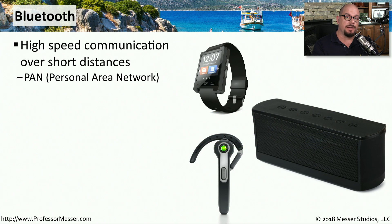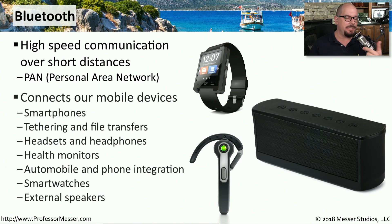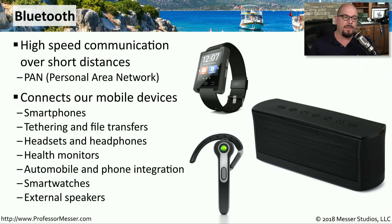Another common wireless networking technology used over short distances is Bluetooth. This is called a personal area network, or PAN. We commonly see Bluetooth used to connect many different kinds of devices — our smartphones and tablets, our automobiles, our health monitors, and smartwatches. We also use Bluetooth for tethering and file transfers between our devices.